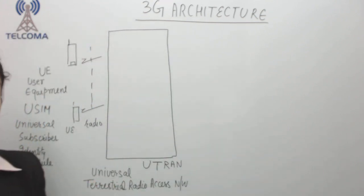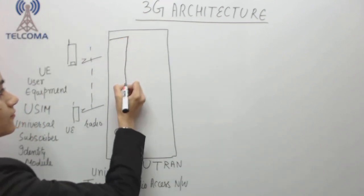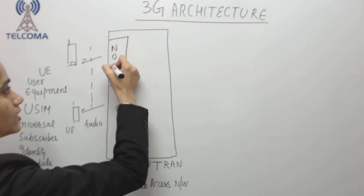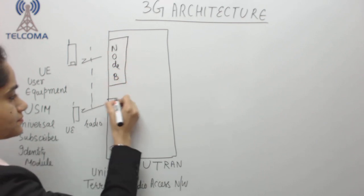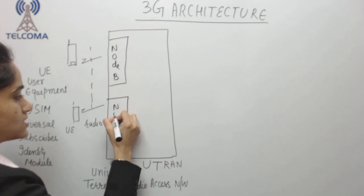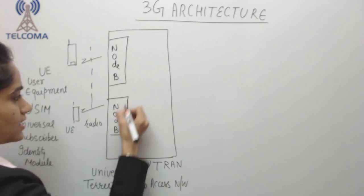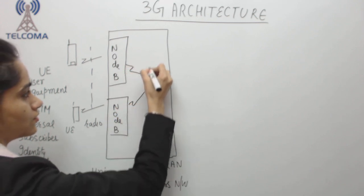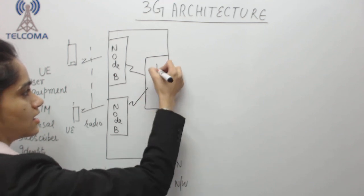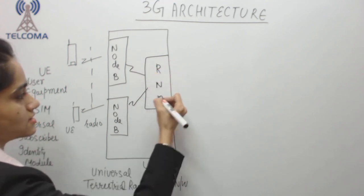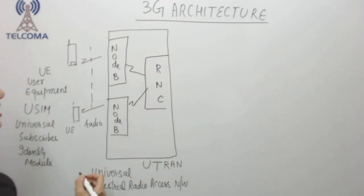Now this Node B is attached to the controller, and the controller is RNC where RNC stands for Radio Network Controller.